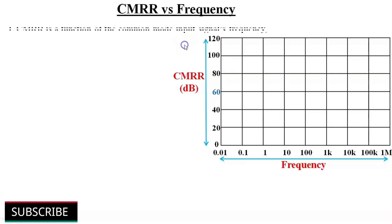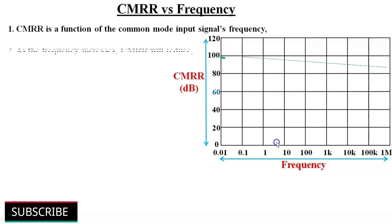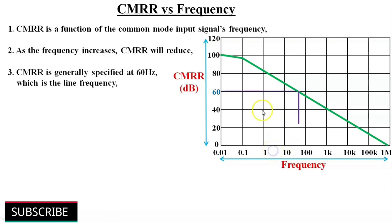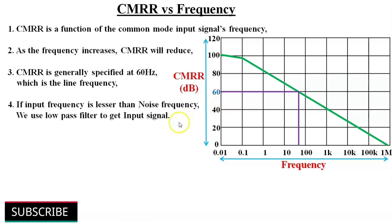CMRR also depends on the frequency of the common mode input signal. As input frequency increases, CMRR will reduce. CMRR is generally specified at 60 Hz, which is called the line frequency. If it is high-frequency noise, the operational amplifier will not be able to suppress it as effectively as it suppresses 60 Hz noise. If the input signal frequency is lower than the noise frequency, we can use a low-pass filter at the input. These are some design aspects to consider while designing circuits.